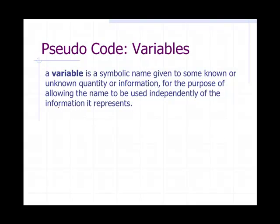A variable is a symbolic name given to some known or unknown quantity or information for the purpose of allowing the name to be used independently of the information it represents.